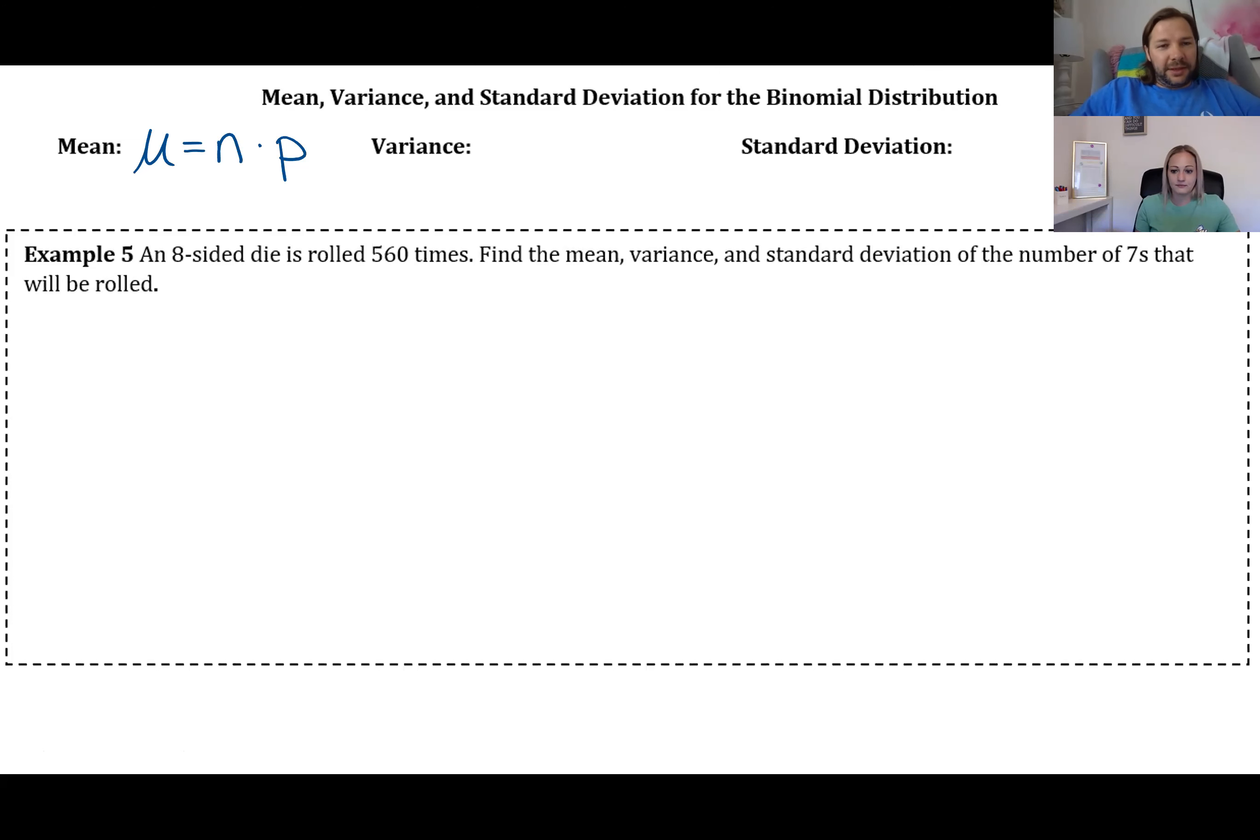So there are slightly different formulas than the things we've seen before and unfortunately there's no shortcut in the calculator for calculating them, but the formulas are seriously like the easiest things that you could come up with. So for mean it's just n times p.